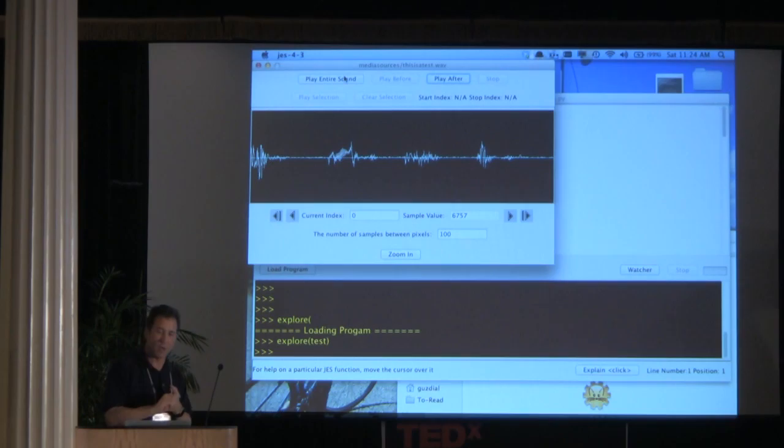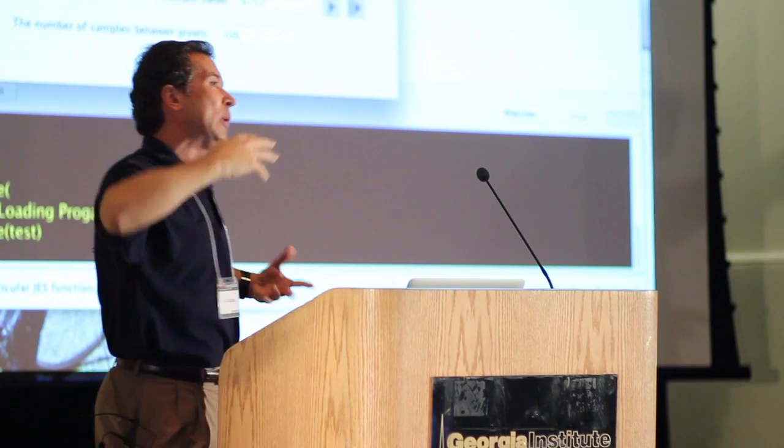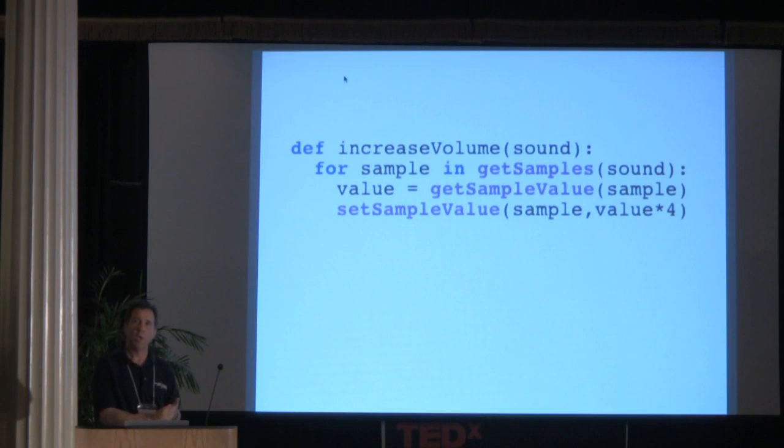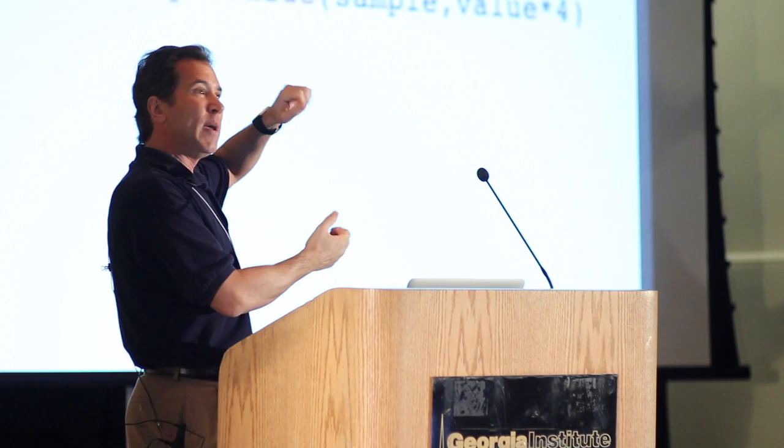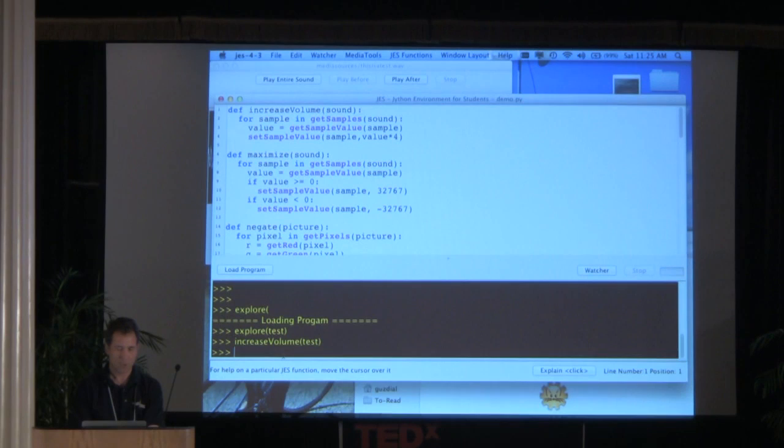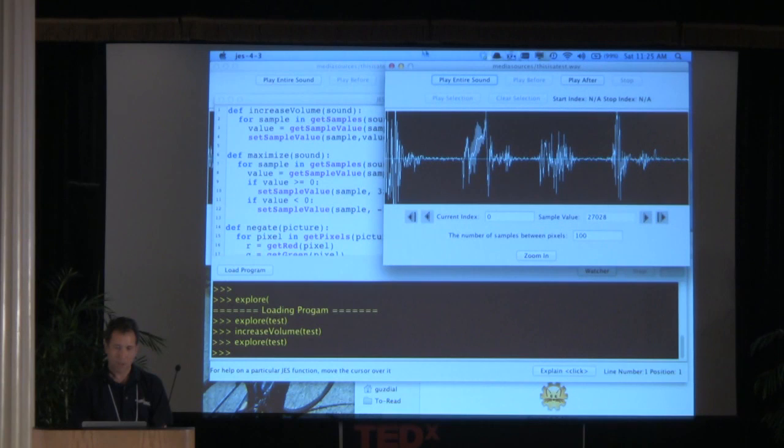How would we make this sound bigger? How would we make the volume bigger? Well, what we'd want is for the top ones to be even more positive and the negative ones to be even more negative. We want to increase it, strengthen the wave, lengthen the wave. Here is a piece of code that does that. To increase the volume of the sound, you want to walk through each of the samples in the sound, get that value out of it, and we multiply it by some constant. Here we're going to do four. That's going to make the positive values bigger and the negative values even more negative. So I'm going to increase volume of test, explore test. And if we look at it, it looks like the waves are bigger.